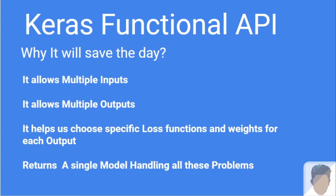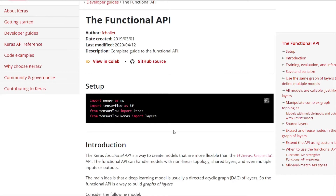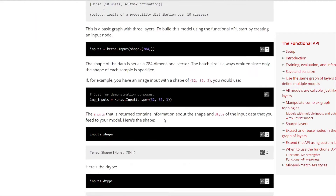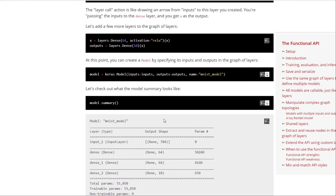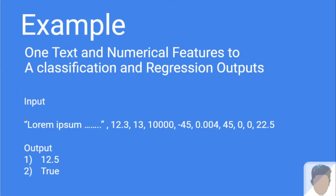Let's jump into an example. Here I have taken an example of text and 9 numerical features. So what we have is text and 9 numerical features, and we have two outputs — one is a regression output where we generate a value, and the second is a binary classification to find if it's true or false. You can visit the Functional API documentation for further information on how to import libraries, define inputs, and build a model.